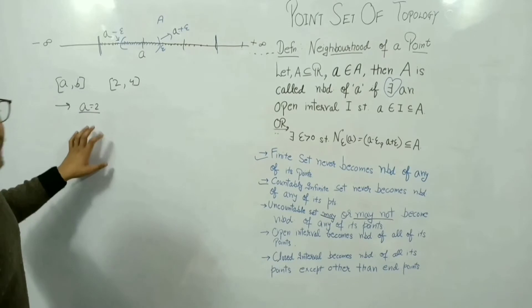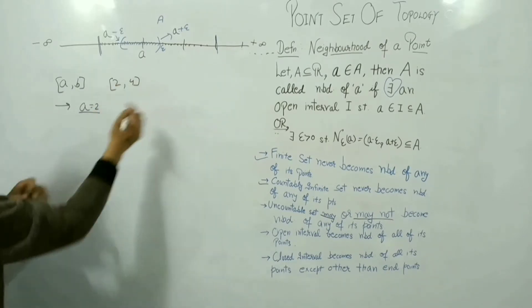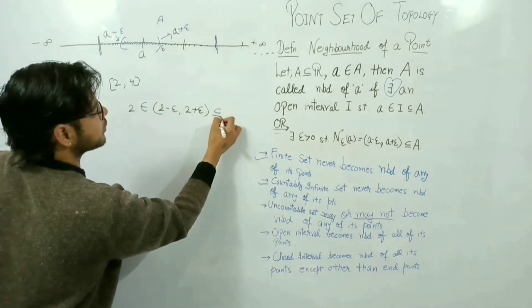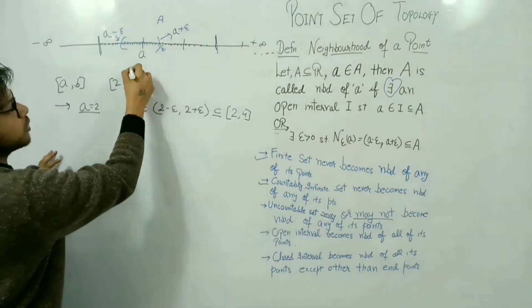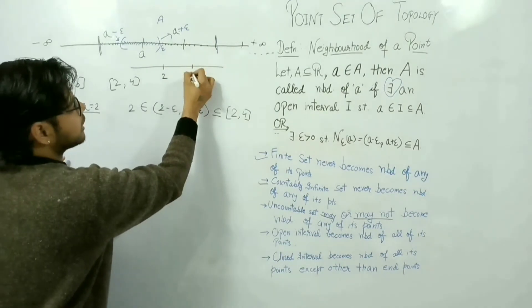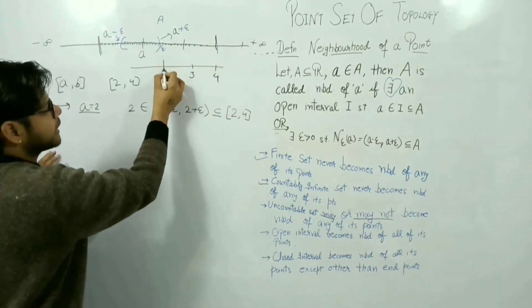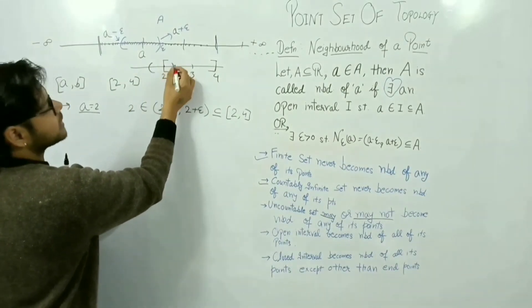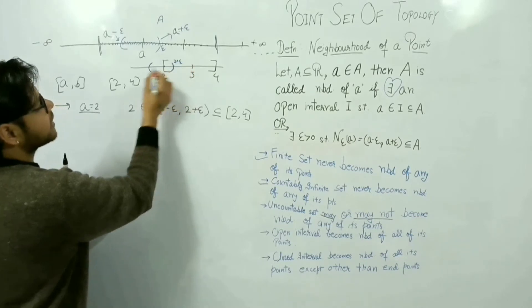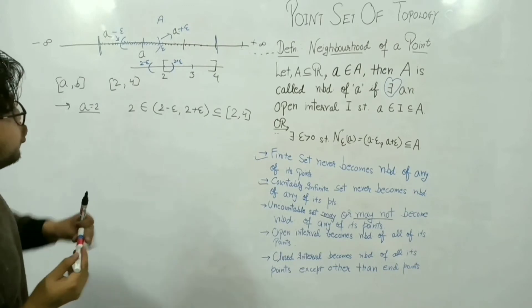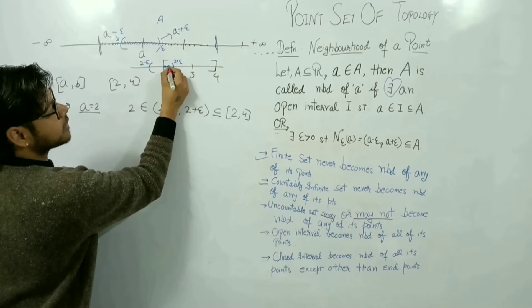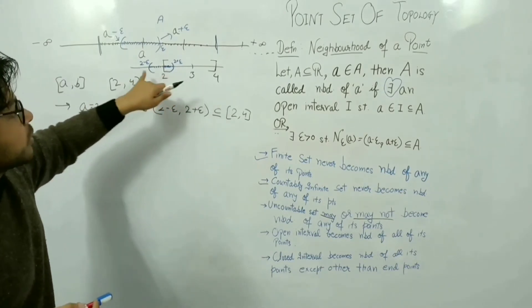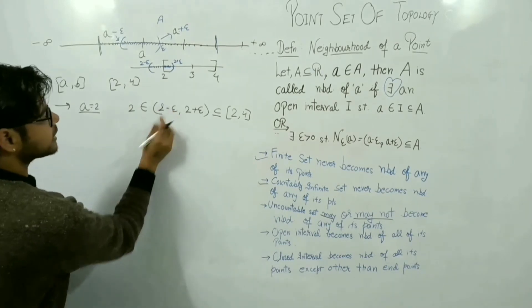Can you say that 2 is a neighborhood point of the set (2, 4)? Is the property satisfied? That is: 2 belongs to (2 minus epsilon, 2 plus epsilon) which is a subset of (2, 4). Here is 2, here is 3, here is 4. Now I have to fit this interval inside (2, 4).